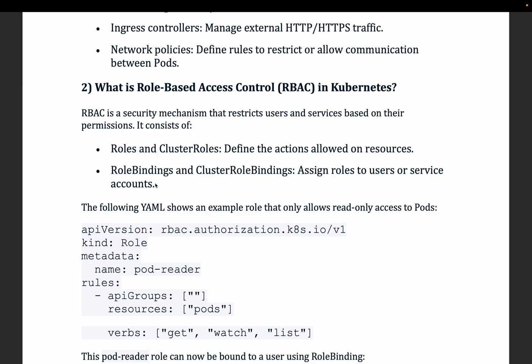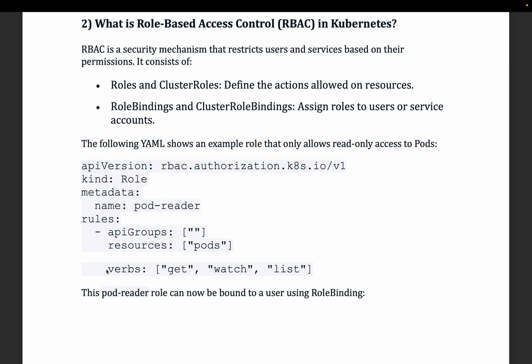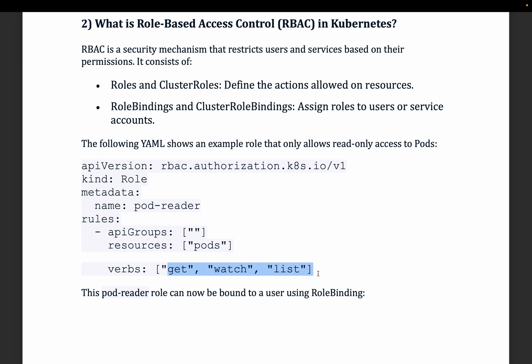Role bindings and cluster role bindings assign roles to users or service accounts. You create a service account and bind it to a cluster role, allowing your application to communicate with cloud services or other objects within the Kubernetes cluster. In a YAML template you can define permissions — for example, a pod-reader role that allows get, watch, and list actions on pods.